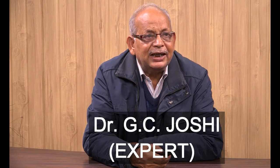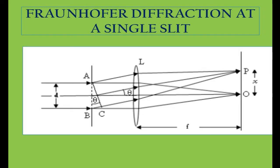A parallel beam of light, either coming from infinity or from a source placed at the focus of a converging lens, will give a parallel beam of light. Suppose this beam is incident on a single slit AB, such that the center of the system makes the image at the point O on the screen.